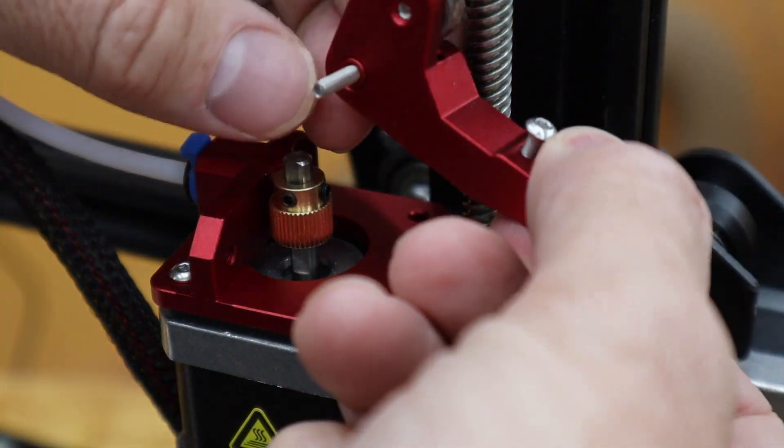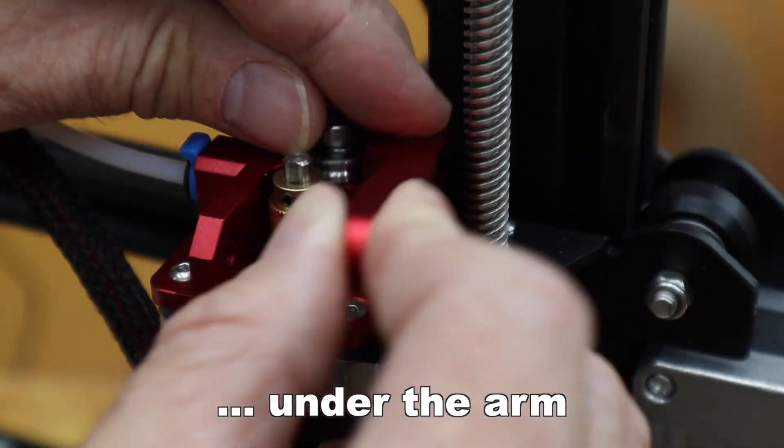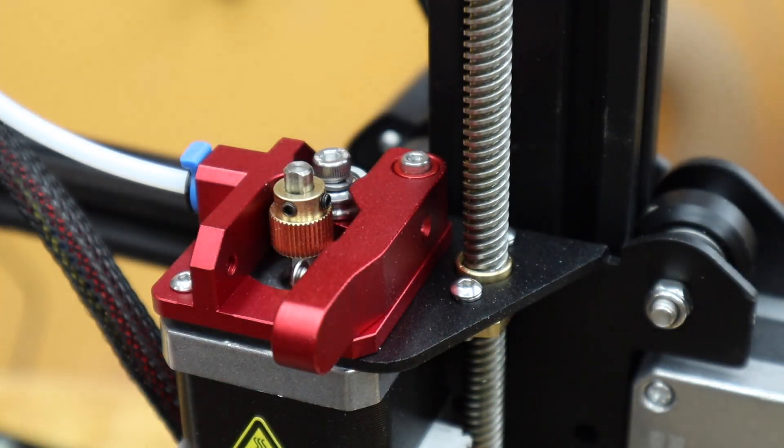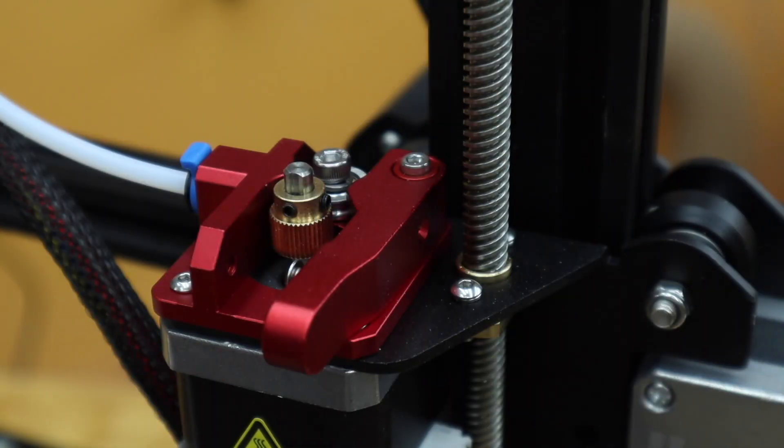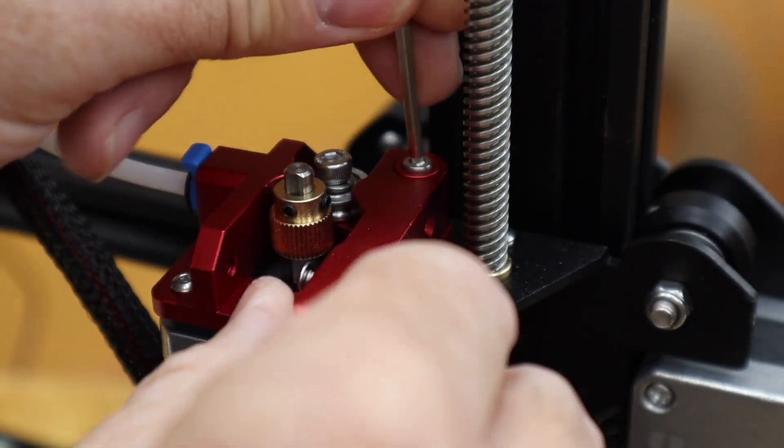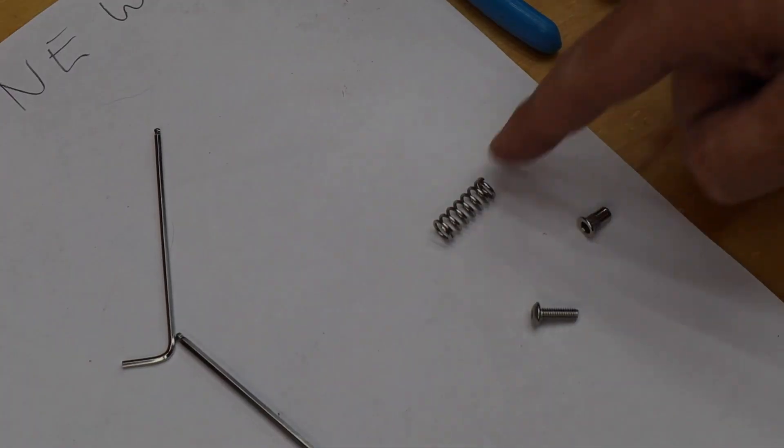Now there are some instructions online that talk about a washer. There was no washer in my kit. So I presume it is not required on the new version of the kit. So last three pieces. We got the spring and this little sleeve that goes in the spring and this last screw.